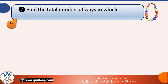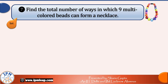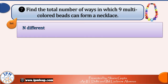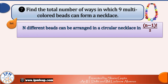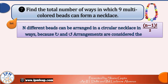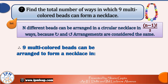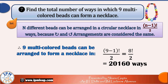Applying this to the last question: find the total number of ways in which 9 multicolored beads can form a necklace. We know n different beads can be arranged in (n−1)!/2 ways because clockwise and anticlockwise arrangements are considered the same. Therefore, 9 multicolored beads can be arranged to form a necklace in (9−1)!/2 = 8!/2 = 20160 ways.